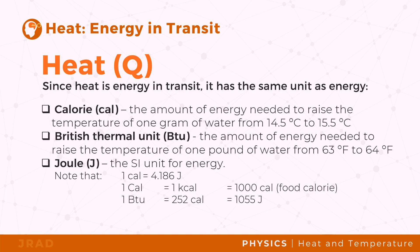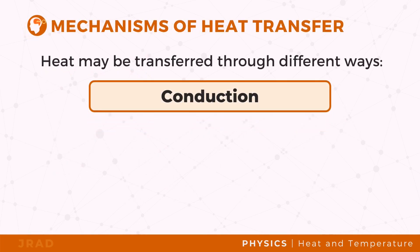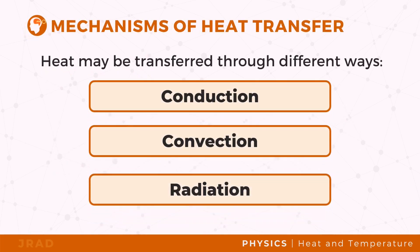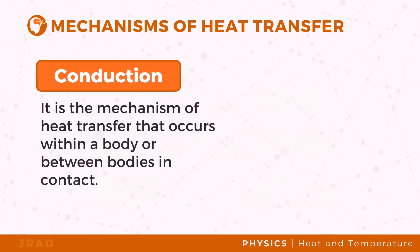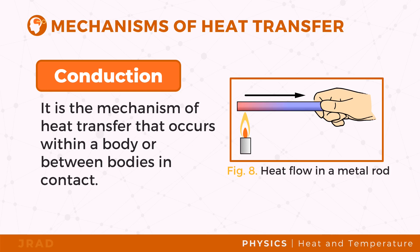Heat may be transferred through conduction, convection, and radiation. Conduction is a mechanism of heat transfer that occurs within a body or between bodies in contact. Metals are generally good conductors because they contain free electrons that can rapidly carry energy from hotter to cooler regions of the metal. Since conduction needs a medium for the transfer of heat, conduction through a vacuum is not possible.